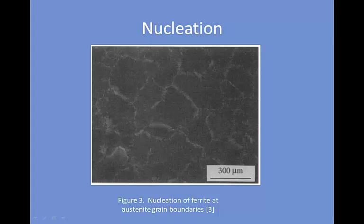In the case of plain carbon steels, as the temperature drops below a certain point, carbon in the austenite matrix becomes oversaturated and begins to diffuse out. As the carbon leaves the matrix, it creates localized areas of high carbon content and localized areas of high iron content. The areas of high iron content will form ferrite, and the areas of high carbon content will form cementite. Because carbon diffusion is faster along grain boundaries, and because it requires less energy to form nuclei along grain boundaries, the ferrite and cementite will nucleate along the austenite grain boundary.